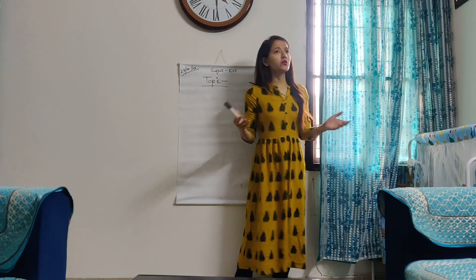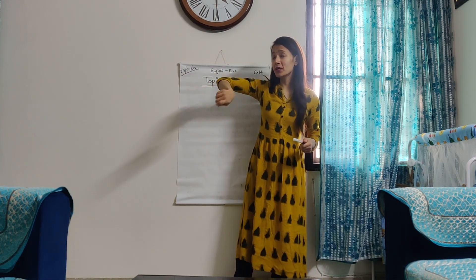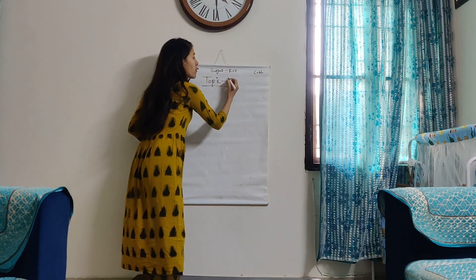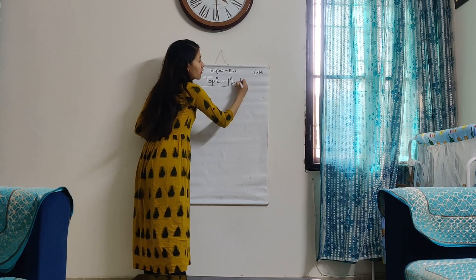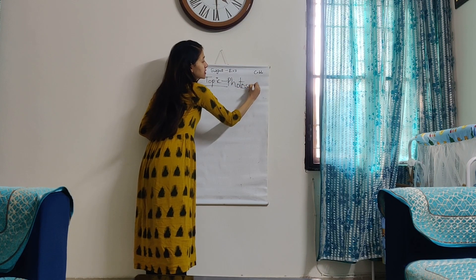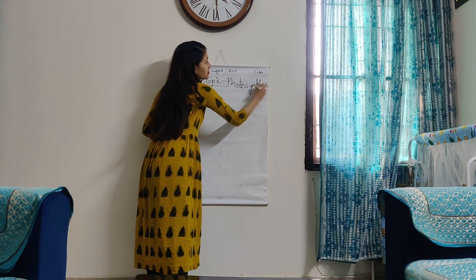So when we prepare our food, what do we call it? We call it cooking. But do you know that plants also prepare their own food? And when plants prepare their food, what do we call it? When we human beings prepare our food, we call it cooking. So when plants prepare their food, we call it photosynthesis. Photosynthesis is a process of how plants prepare their own food.